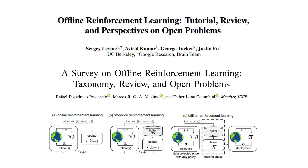For off-policy, you get a buffer of interactions, store it, train the agent, then go back and get more data to keep training. Offline reinforcement learning is like off-policy reinforcement learning but you don't go back — you just get a large amount of data, train the agent, and deploy it.